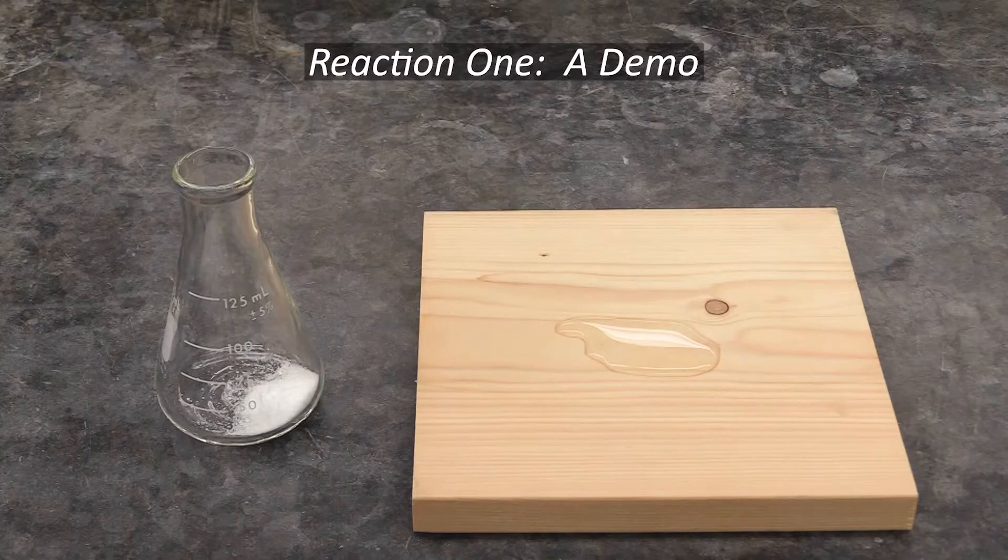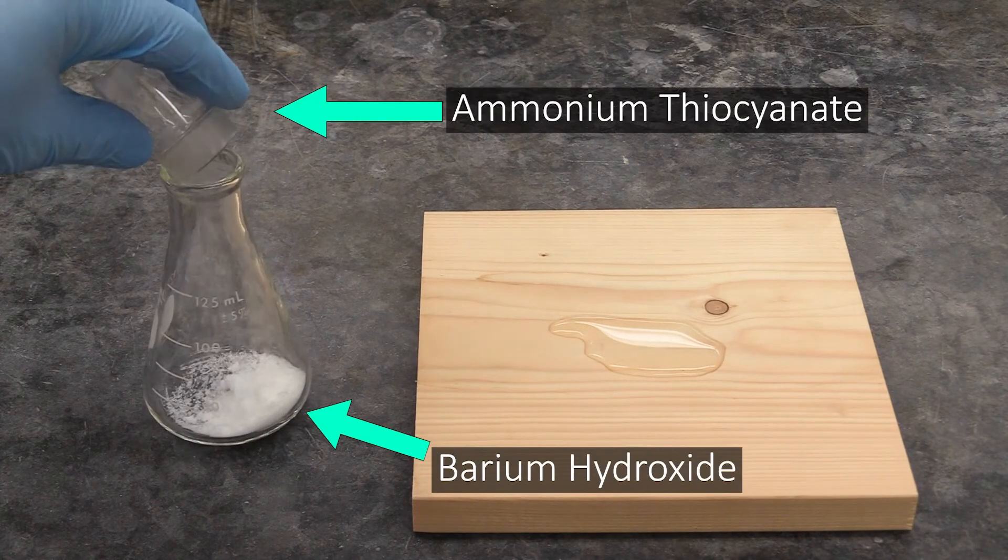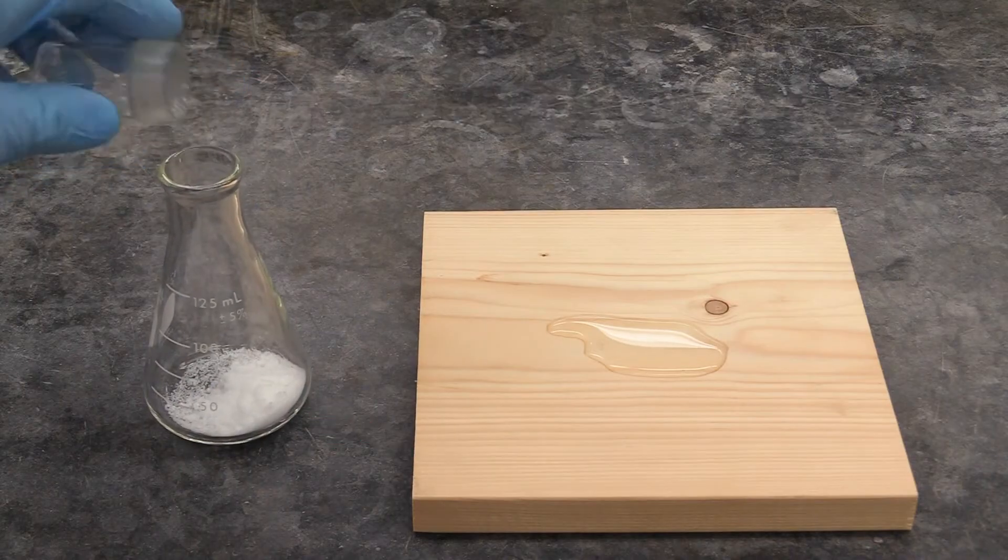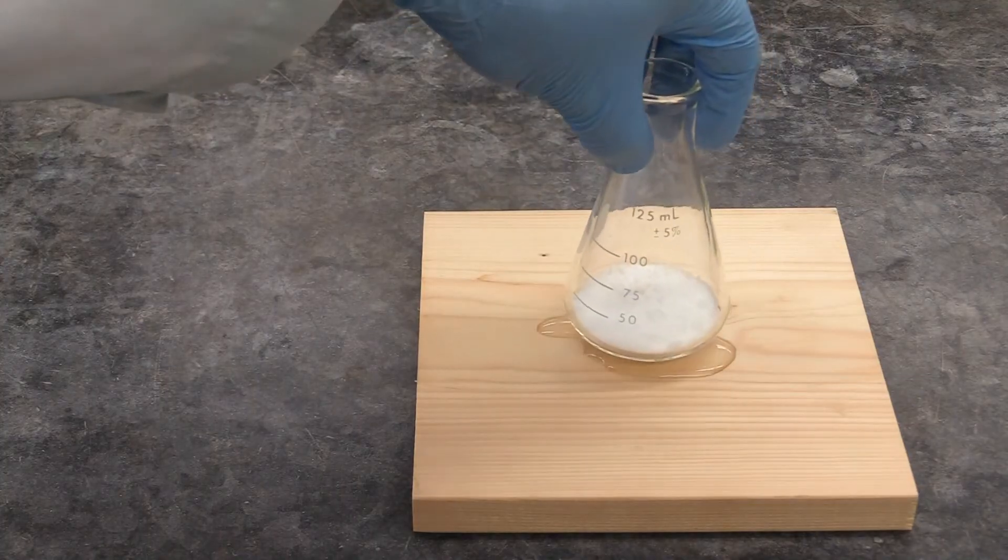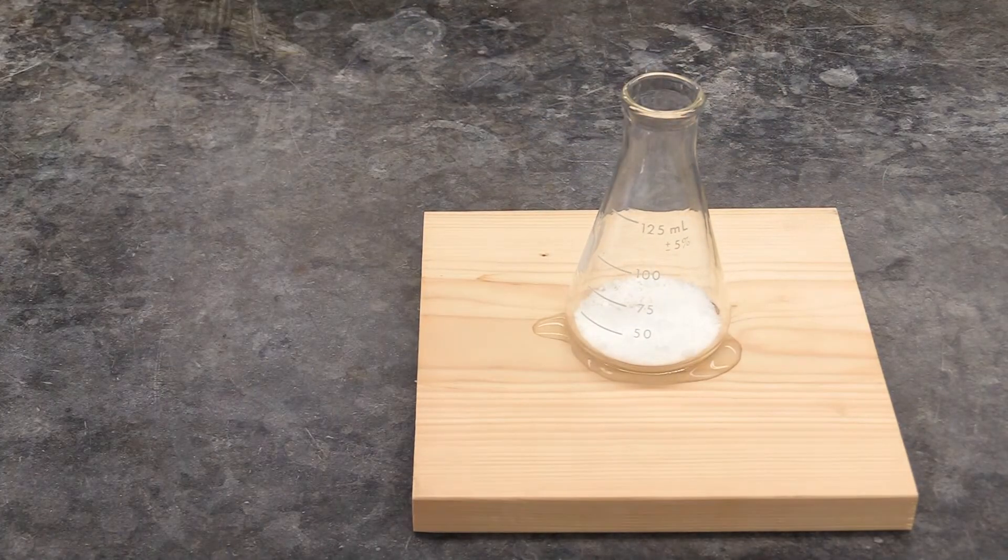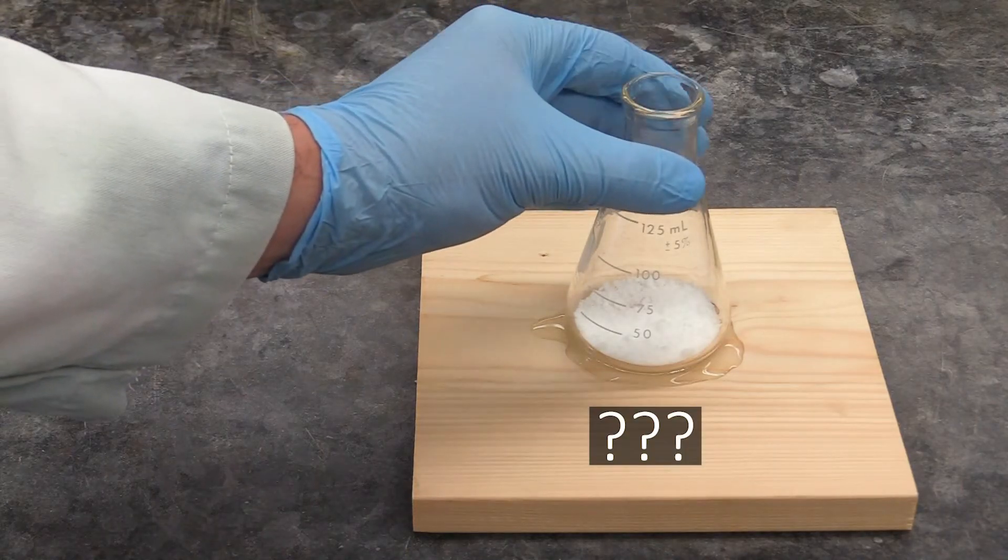The first reaction will be a demo performed by your TA. They will add some ammonium thiocyanate and barium hydroxide to a flask, mix it up real good, and put it on a puddle of water on a wooden block. After a couple of minutes, your TA will try to pick the flask up. Watch what happens when they do.